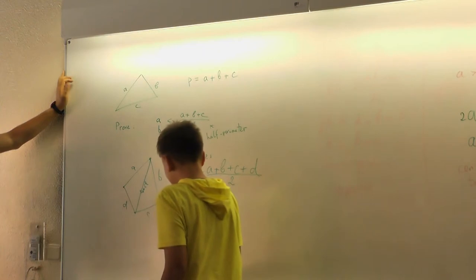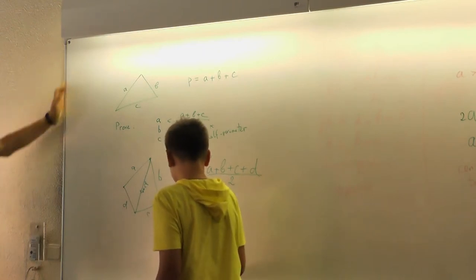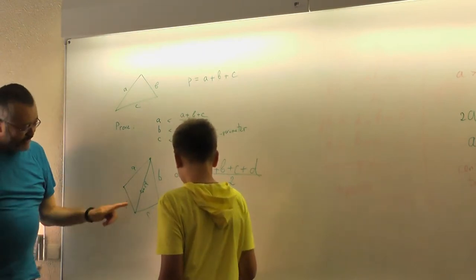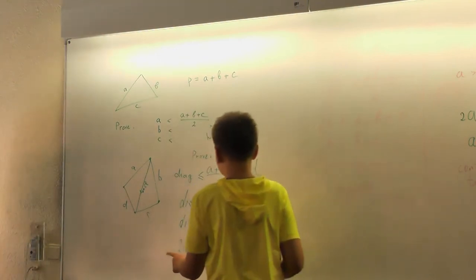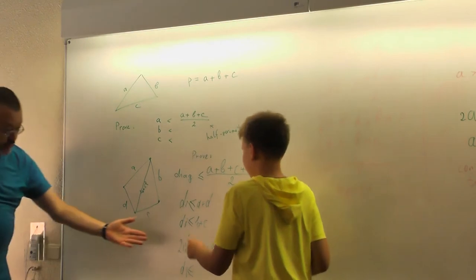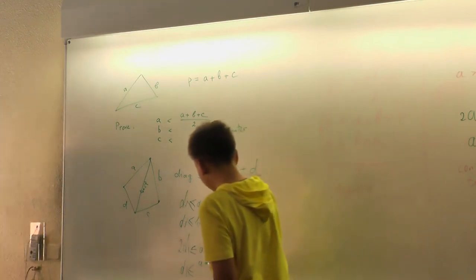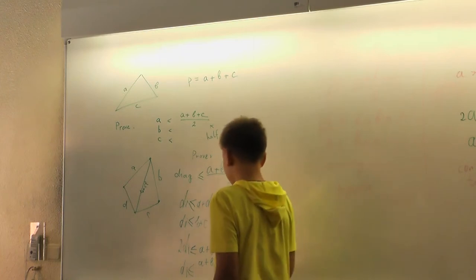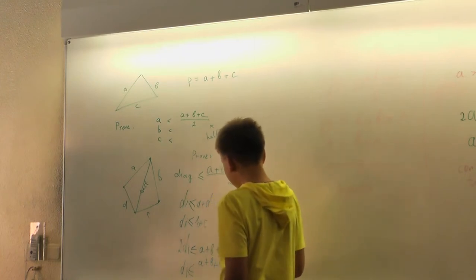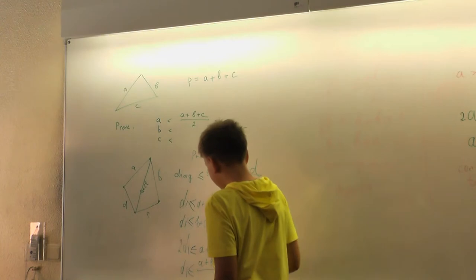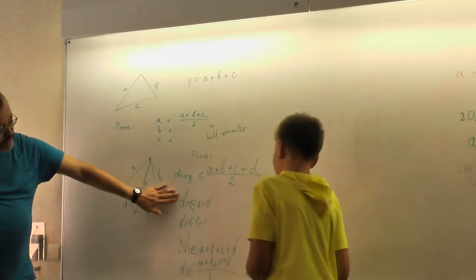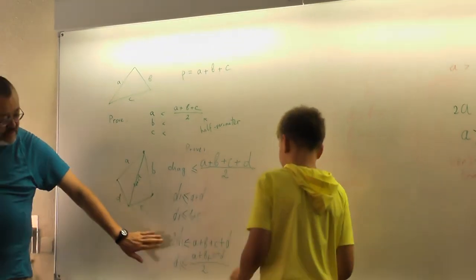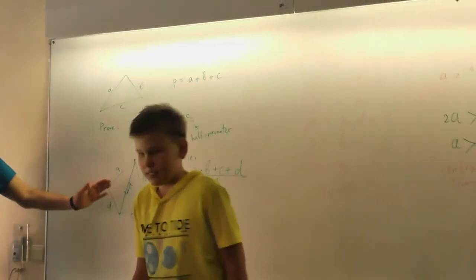And the diagonal is two. So now the half of it, which is one diagonal. We can divide everything by two. By two. And the second diagonal is A plus B plus C plus D divided by two. Yeah. So first we sum up all this, and then we divide by two and get what we wanted to get.